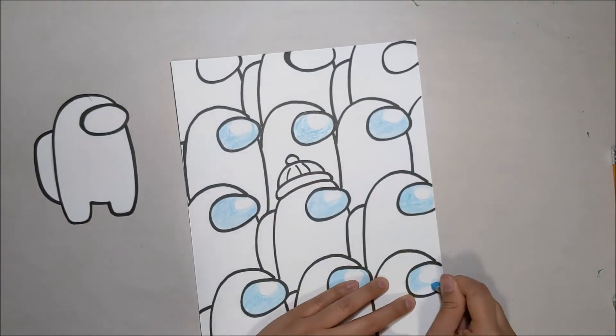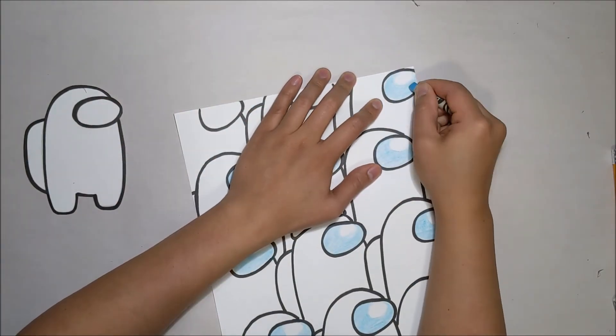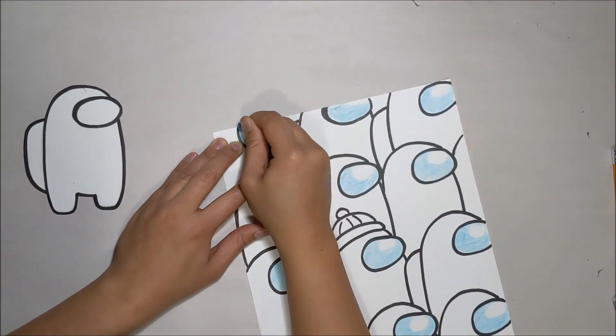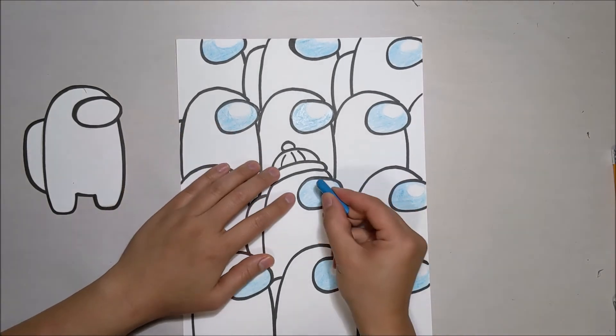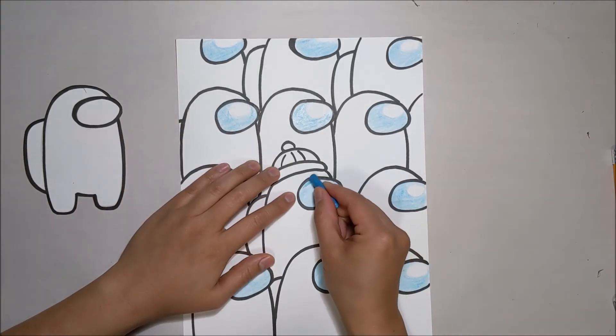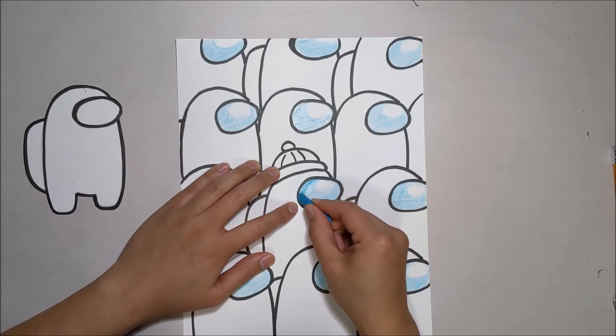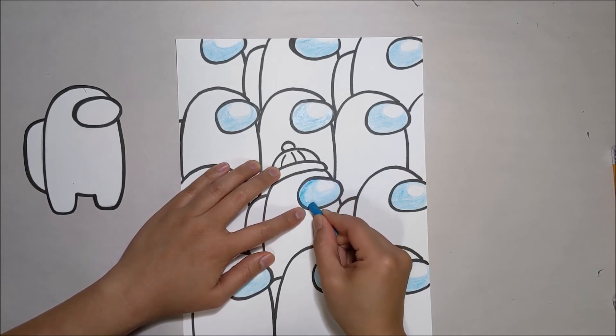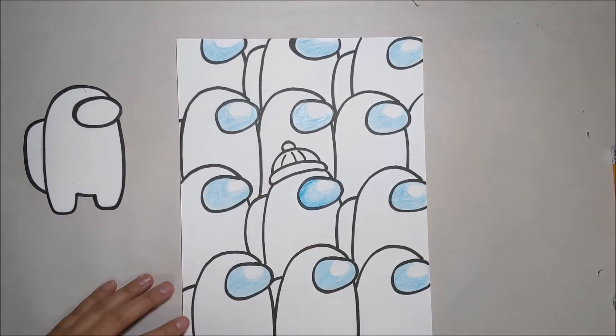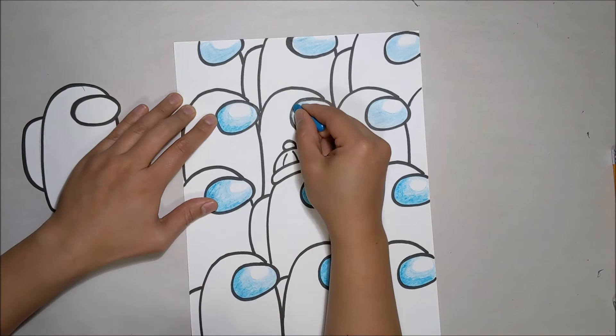First color in all the face covering leaving that oval reflection area. Find a slightly darker blue color to give the face covering a little bit of that shadow. I am going to go in on the left side and towards the bottom edge of the face cover. You want to do that on all of the face covers.